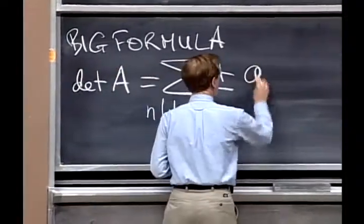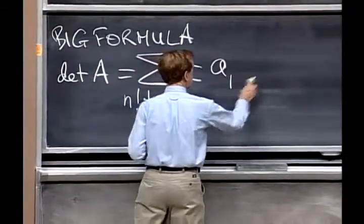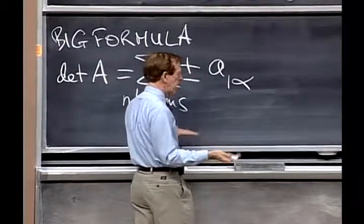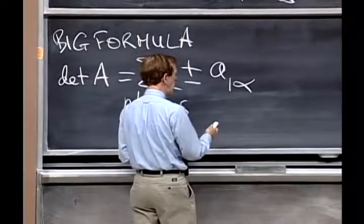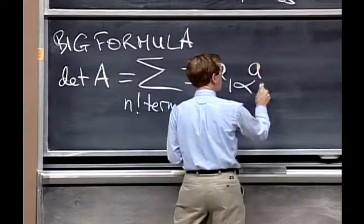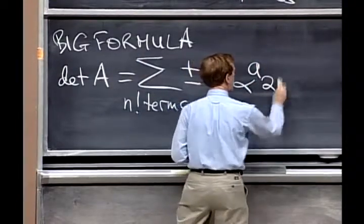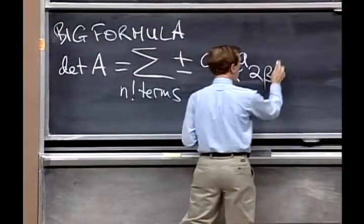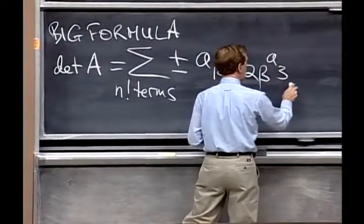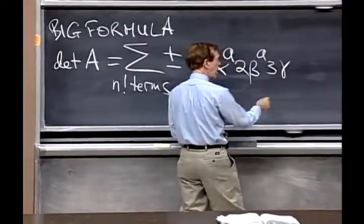So the one in the first row comes from some column alpha. I don't know what alpha is. And the one in the second row, I multiply that by somebody in the second row that comes from some different column. And I multiply that by somebody in the third row who comes from some yet different column.